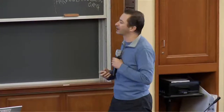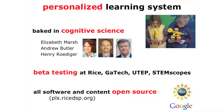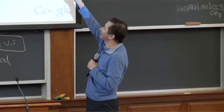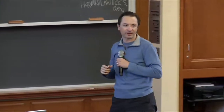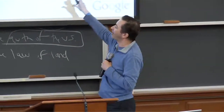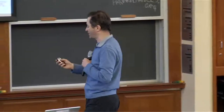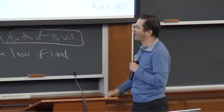We're also working with fabulous cognitive scientists from Duke and Wash U to bake in cognitive science principles into the system. We are beta testing the system right now at Rice, moving into Georgia Tech, UT El Paso, and a few other higher ed schools in the fall, and also into the STEMscopes project. We hope to have about 500,000 students using this personalized learning system this fall. The key thing for this audience is that the architecture, all the software and all the content, is open-licensed under open software and Creative Commons licenses.